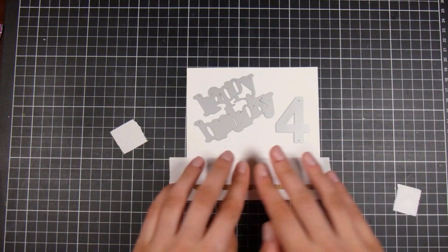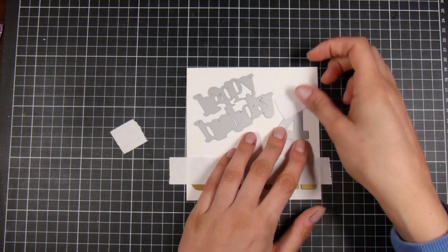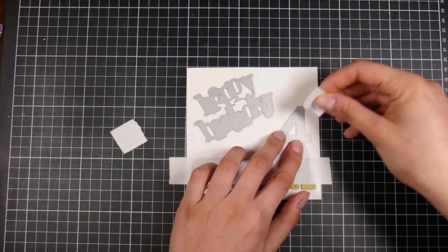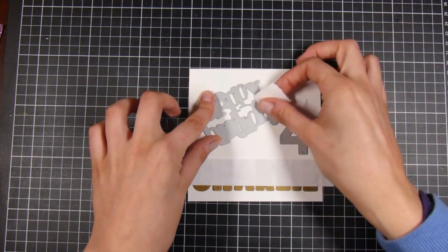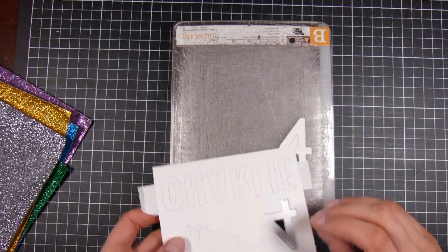I'm going to take some low-tack Post-it note tape - in this case you could use any low-tack tape - and tape them all together so that they are nice and even when I run them through my die cutting machine. I'm taking them all down and I'm gonna run them through all at the same time.